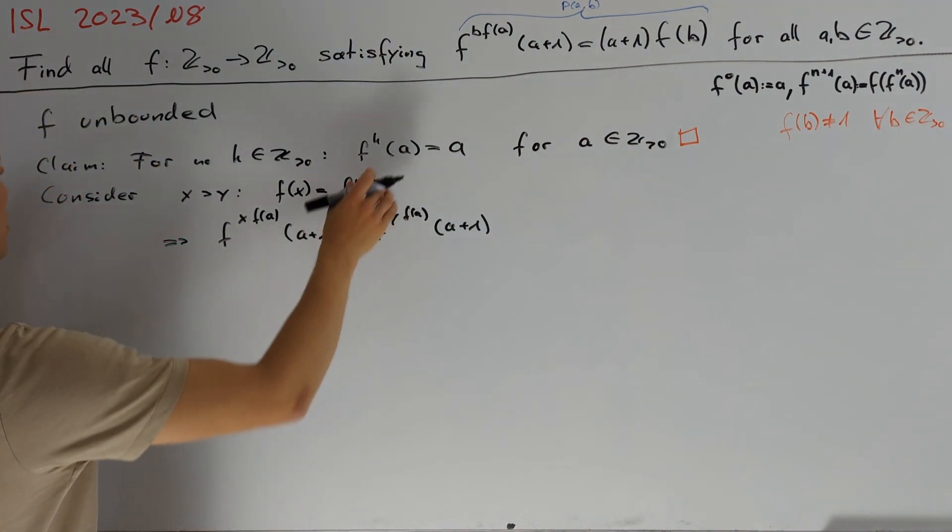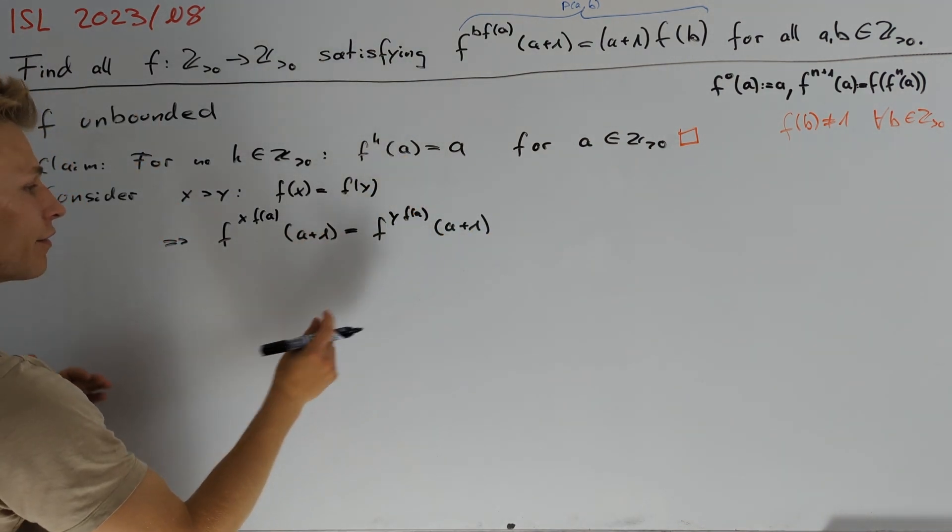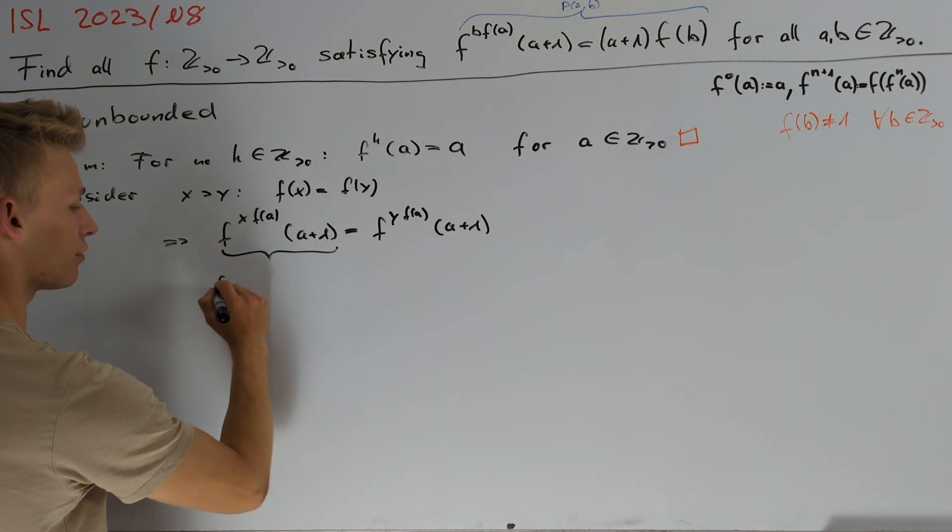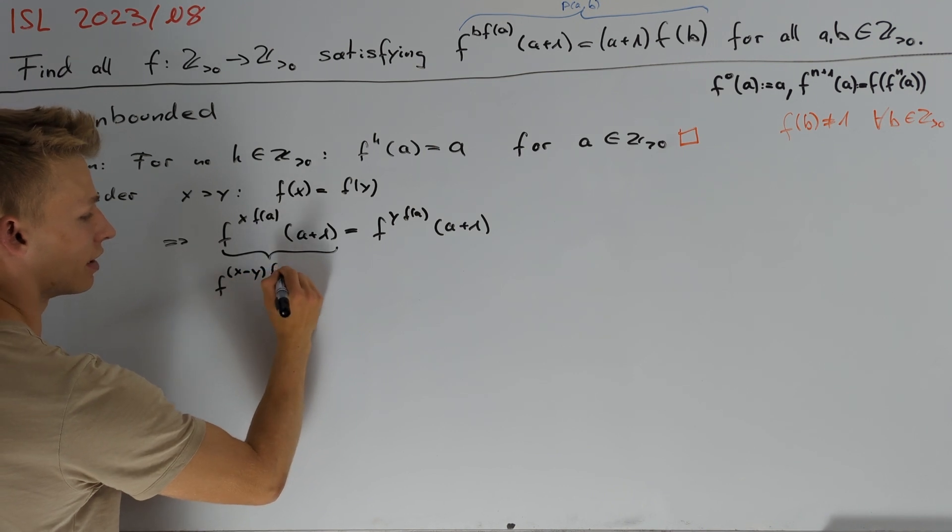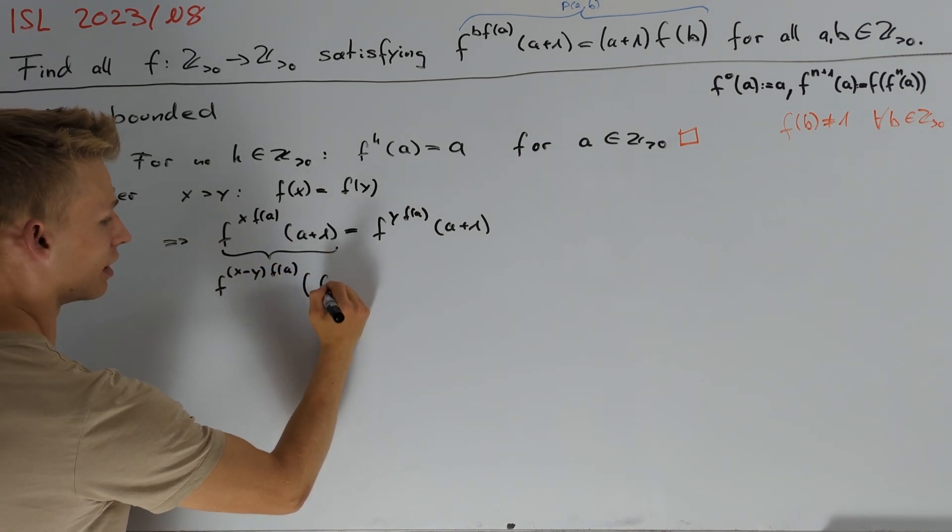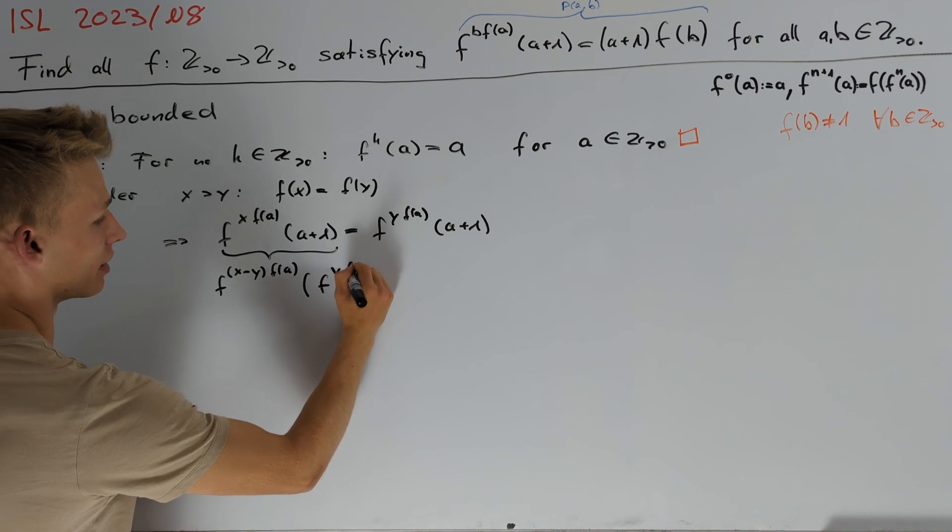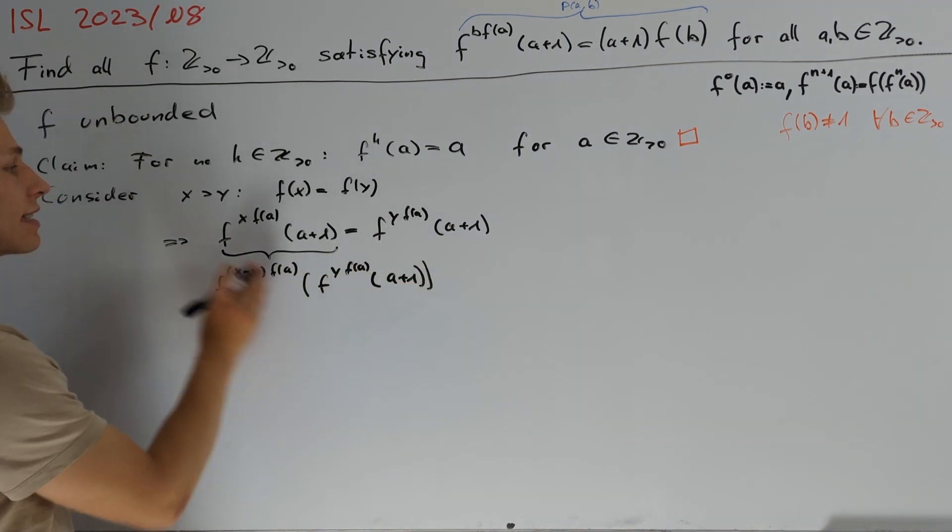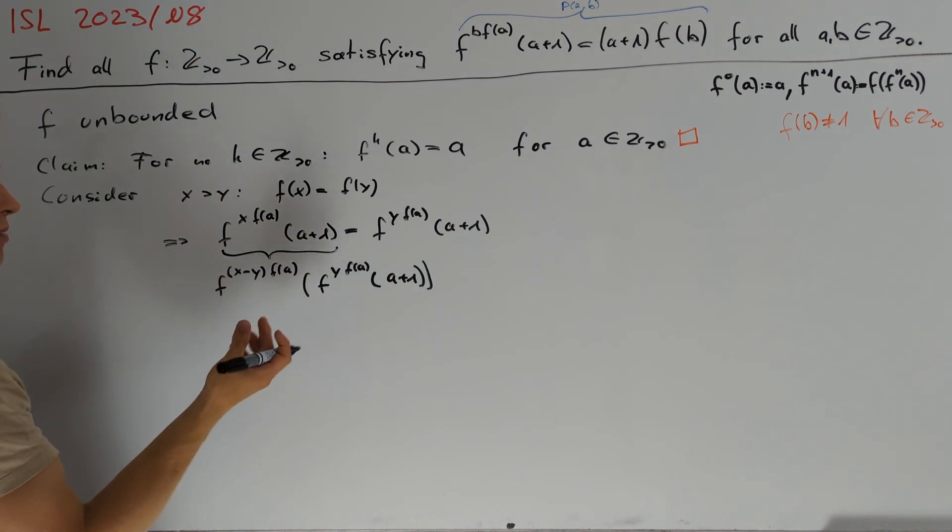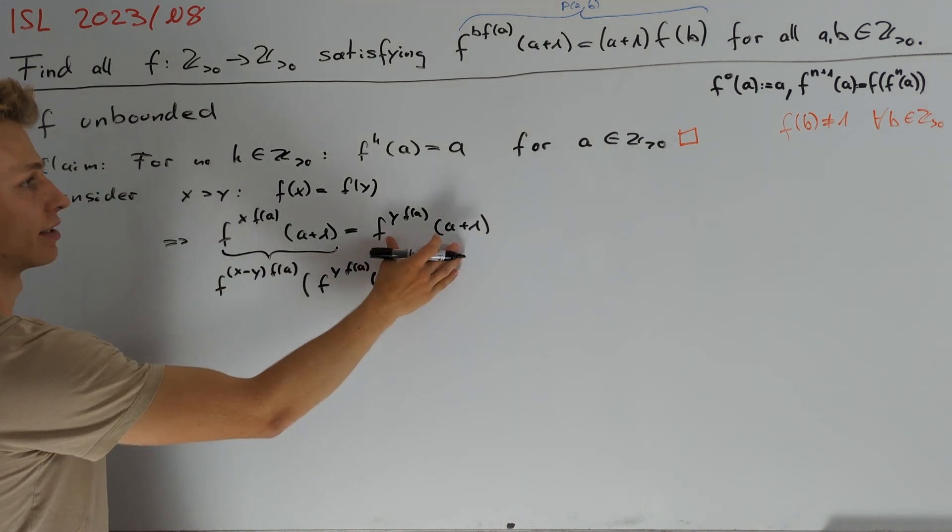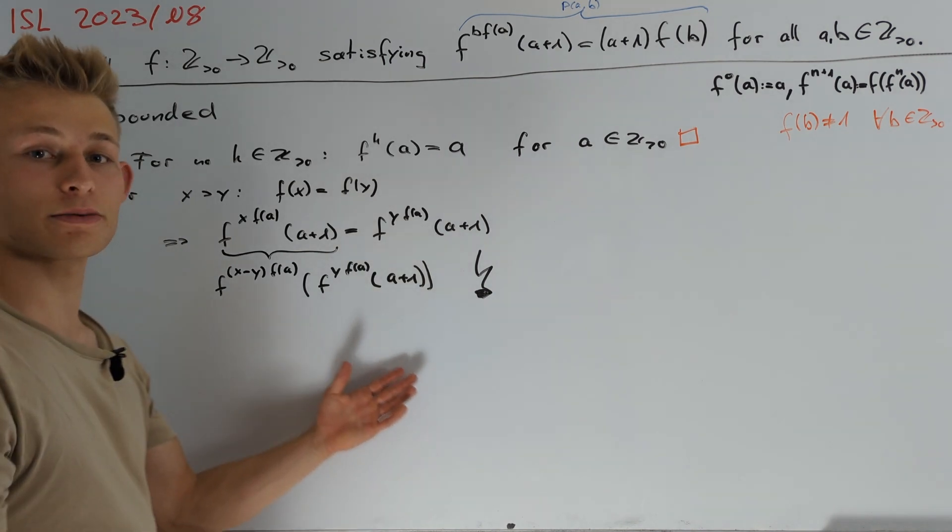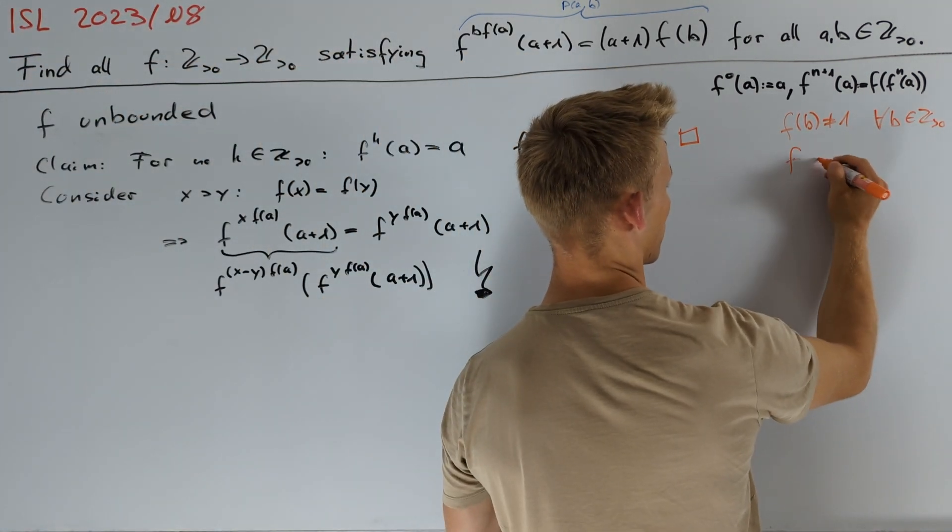This is a contradiction to our previous claim which can be seen if we rewrite the left hand side. Namely, this is just equal to f^((x-y)f(a))(f^(yf(a))(a+1)). Since x is greater than y, we see that this exponent here is positive and moreover, the argument here is equal to the right hand side. So, we are indeed in the case of our claim and thus get a contradiction here. From this argument, we can note down that f is injective.